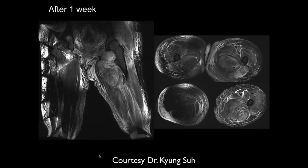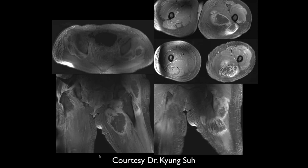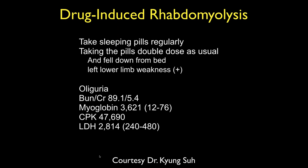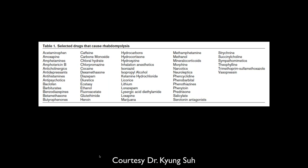A week later it looks a little worse on the left side, and the right side looks better. On post-contrast images it looks like there are infarcts or necrosis of the muscle. History: she was taking sleeping pills regularly, took a double dose, and fell out of bed. Her LDH is really high and CPK is elevated — she's probably in rhabdomyolysis. There are a lot of drugs that can cause it, and this is probably the most common imaging appearance of drug-induced rhabdomyolysis.